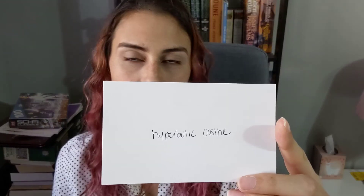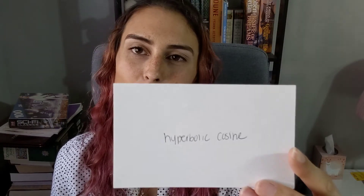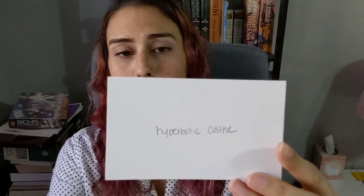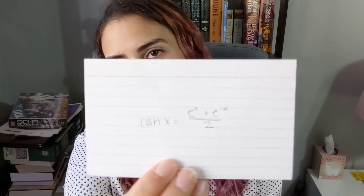Hyperbolic cosine, also called cosh, is equal to (e to the x plus e to the minus x) over 2.